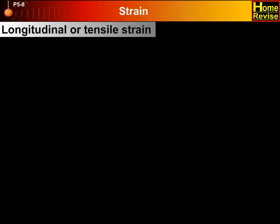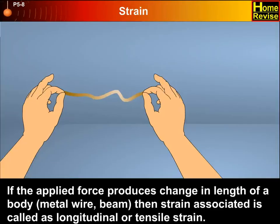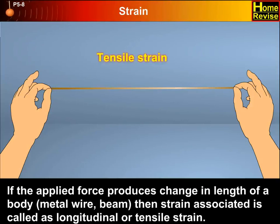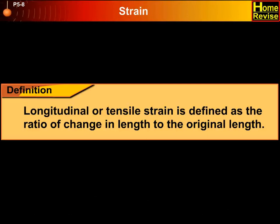Longitudinal or tensile strain: if the applied force produces change in length of a body — for example, in a metal wire or beam — then the strain associated is called longitudinal or tensile strain. It is defined as the ratio of change in length to the original length.